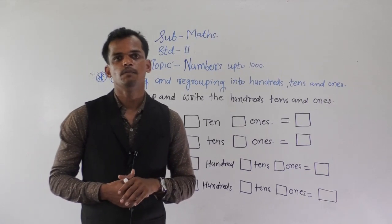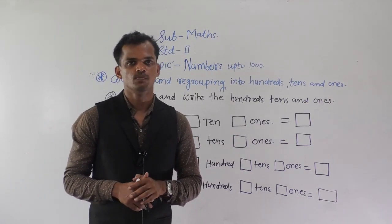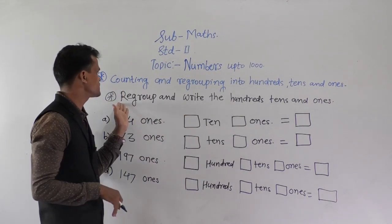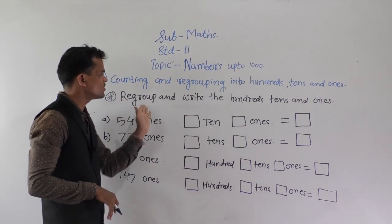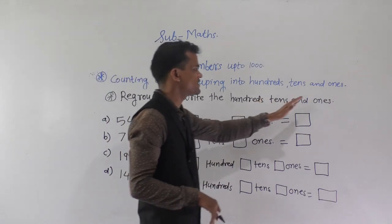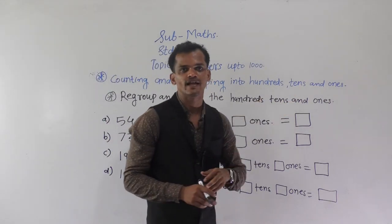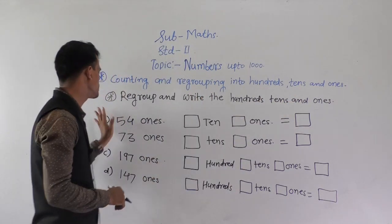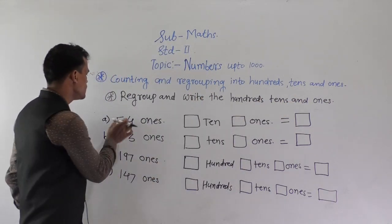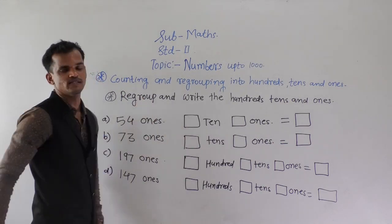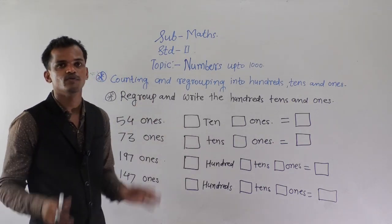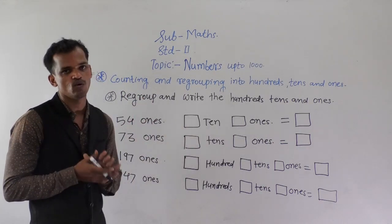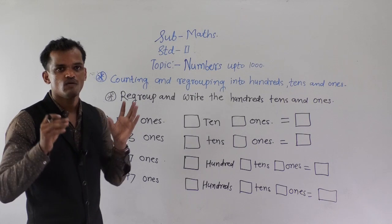Now we will see some examples on regrouping. See the instruction: regroup and write the 100s, 10s, and 1s, and write the number. See the first example: 54 ones. If we have 54 ones.